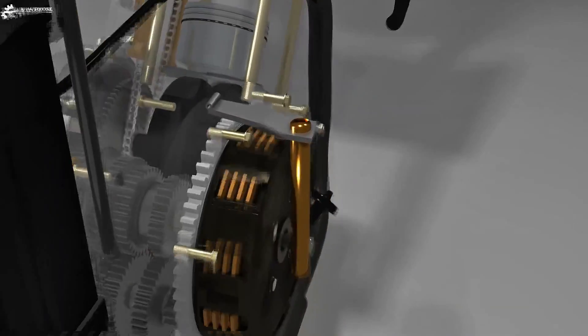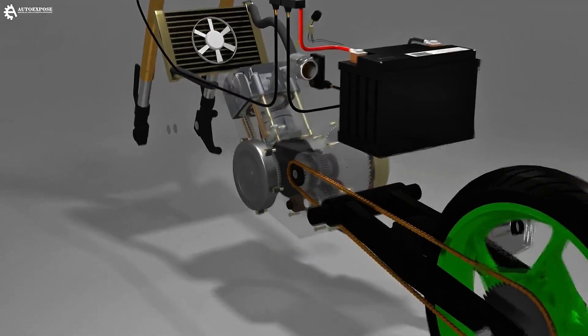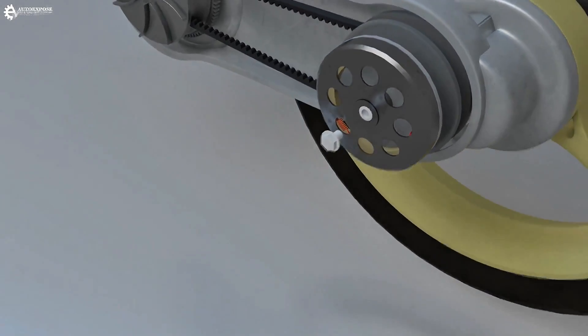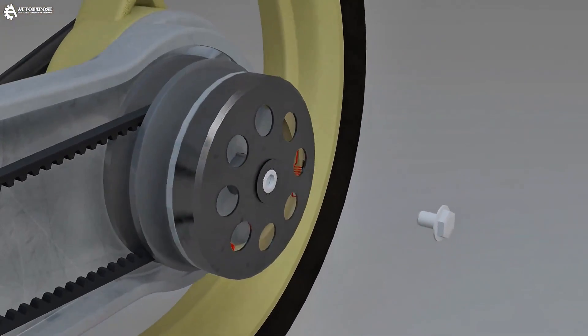Unlike a manual clutch, which is bidirectional, transmitting rotation from both the engine and the wheels, the clutch on an automatic motorcycle is one way. Meaning it can only transmit rotation from the engine.